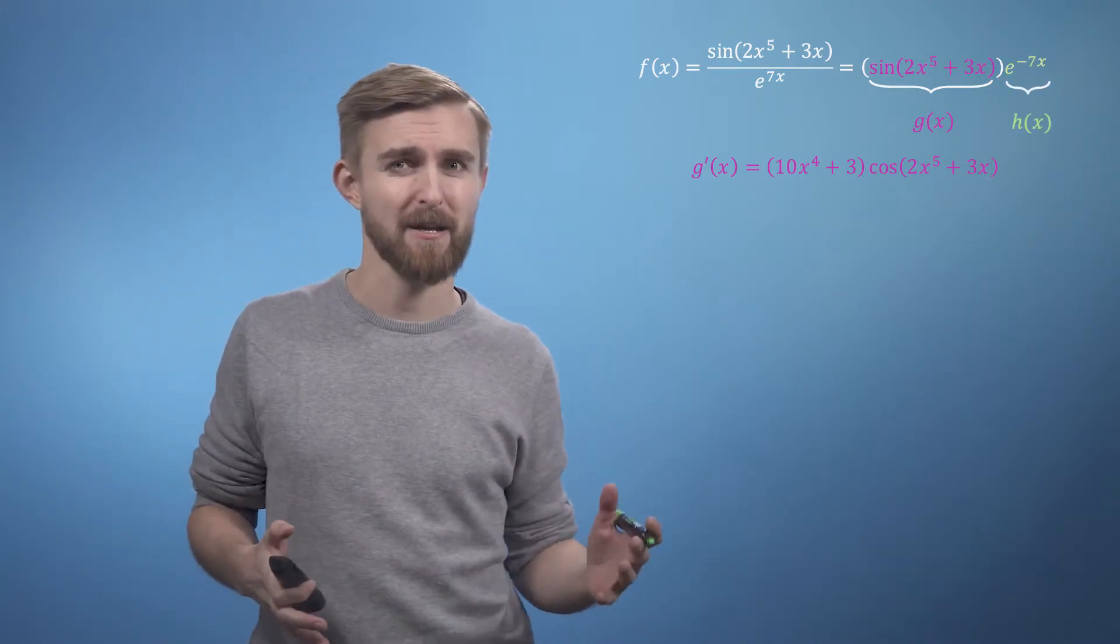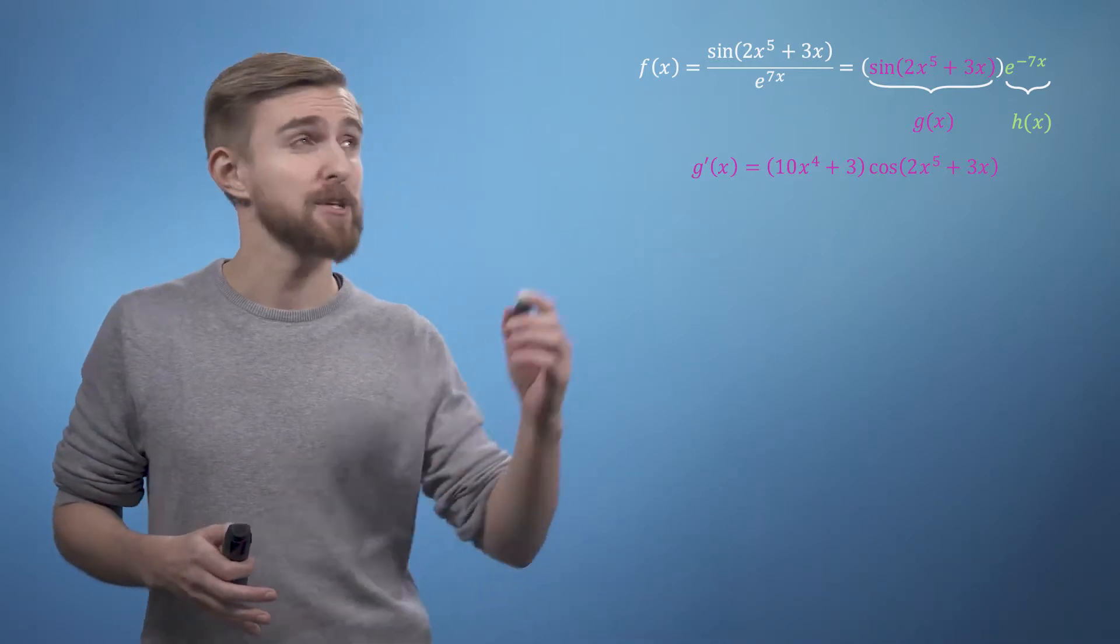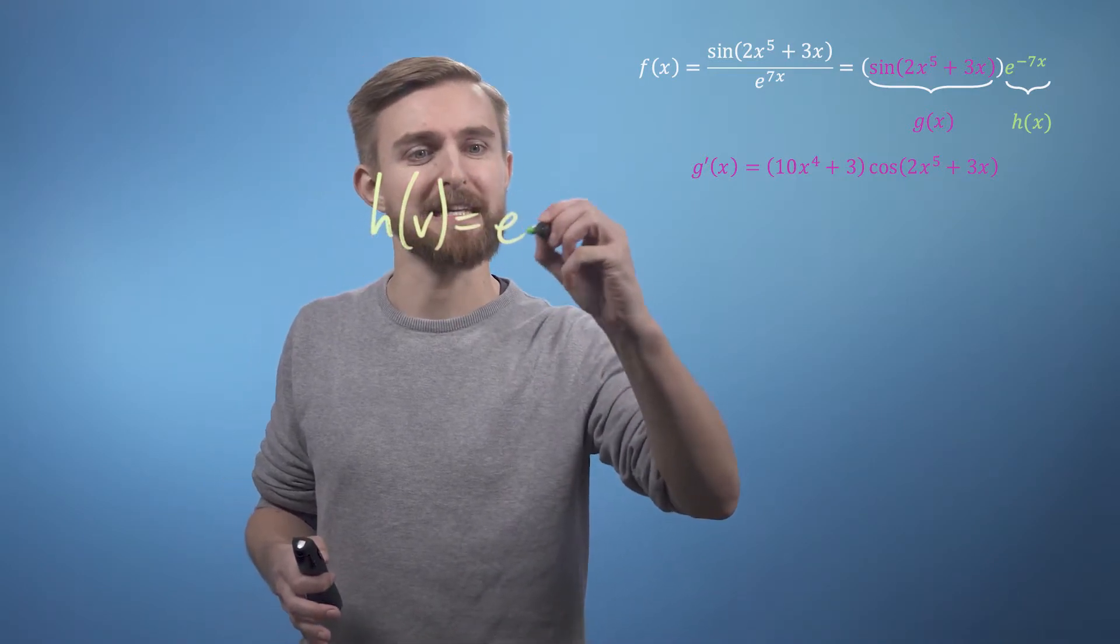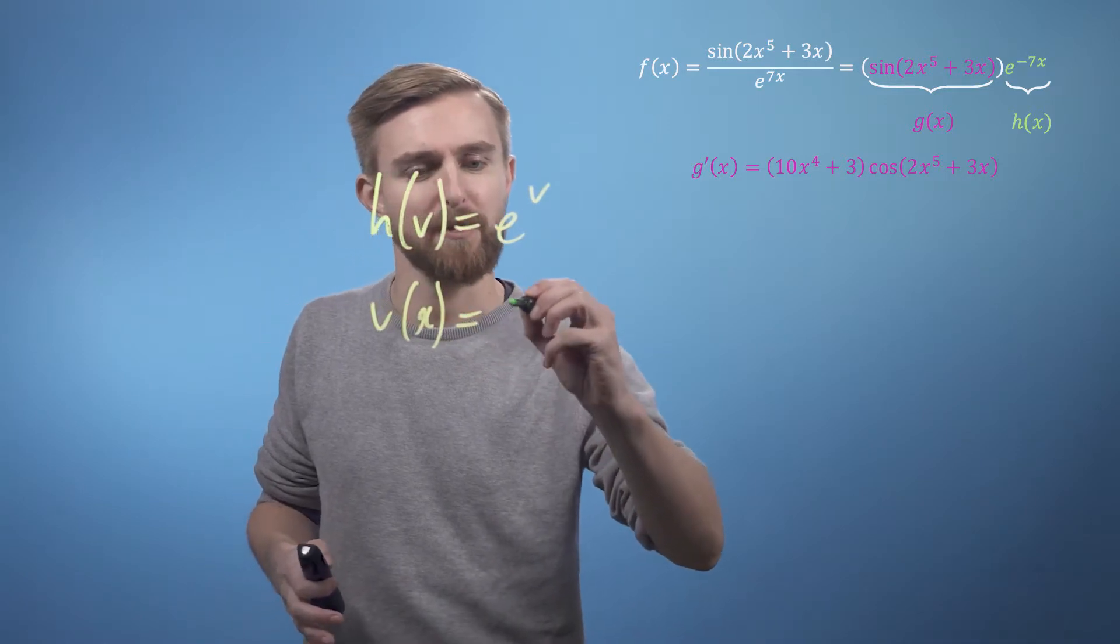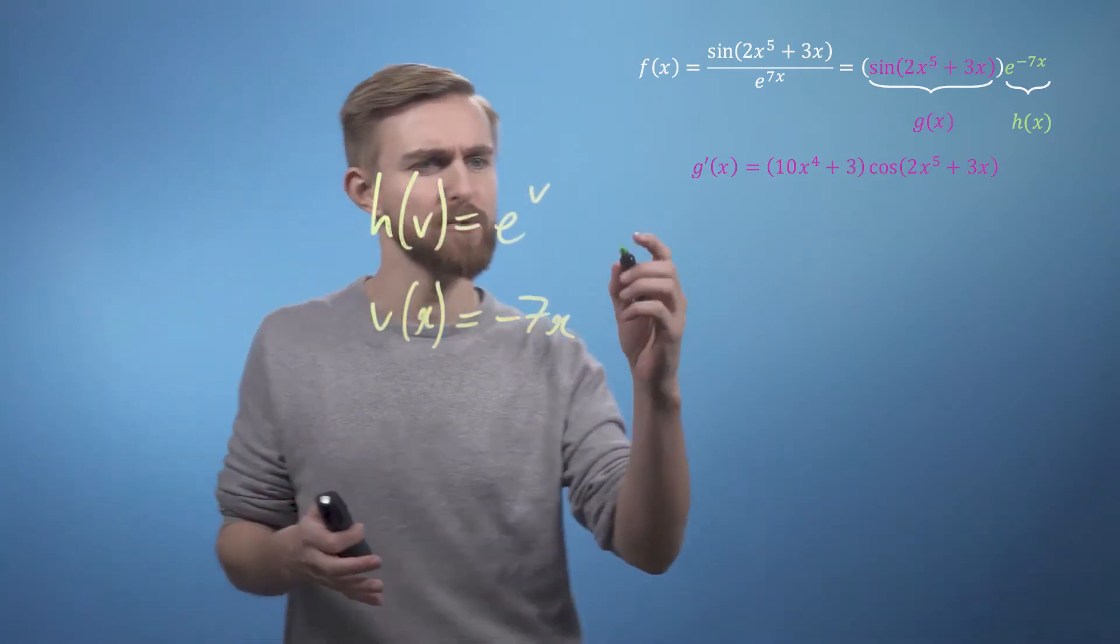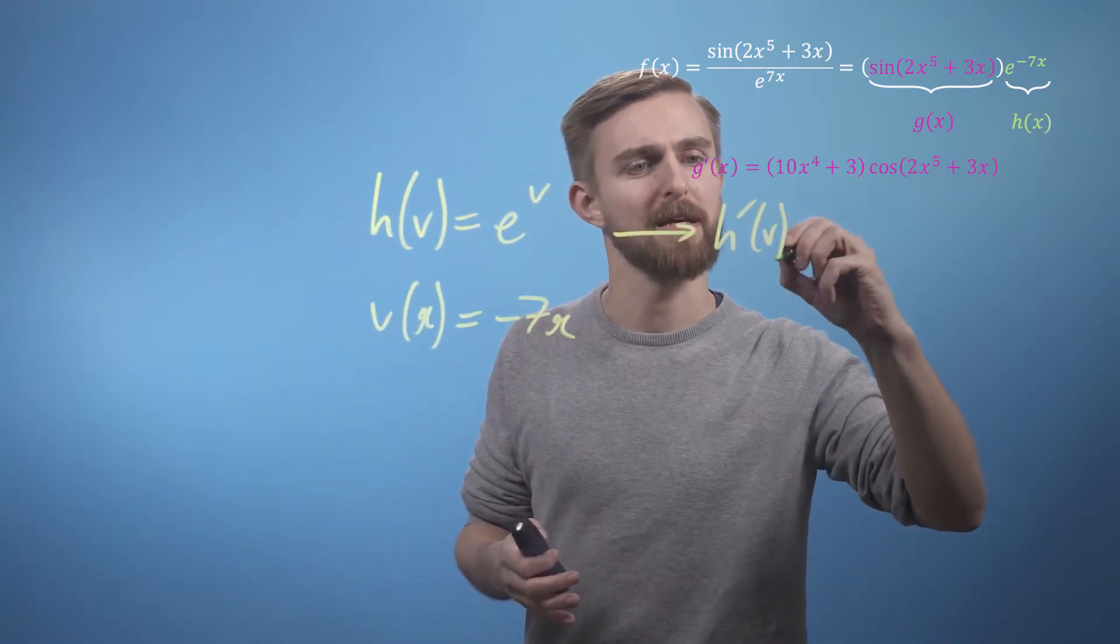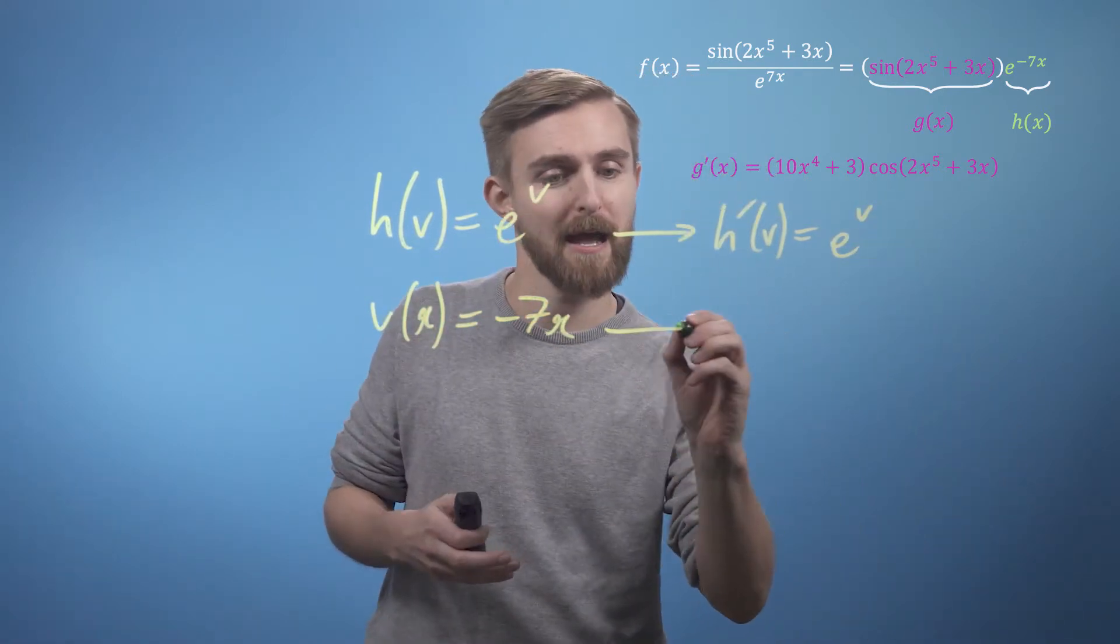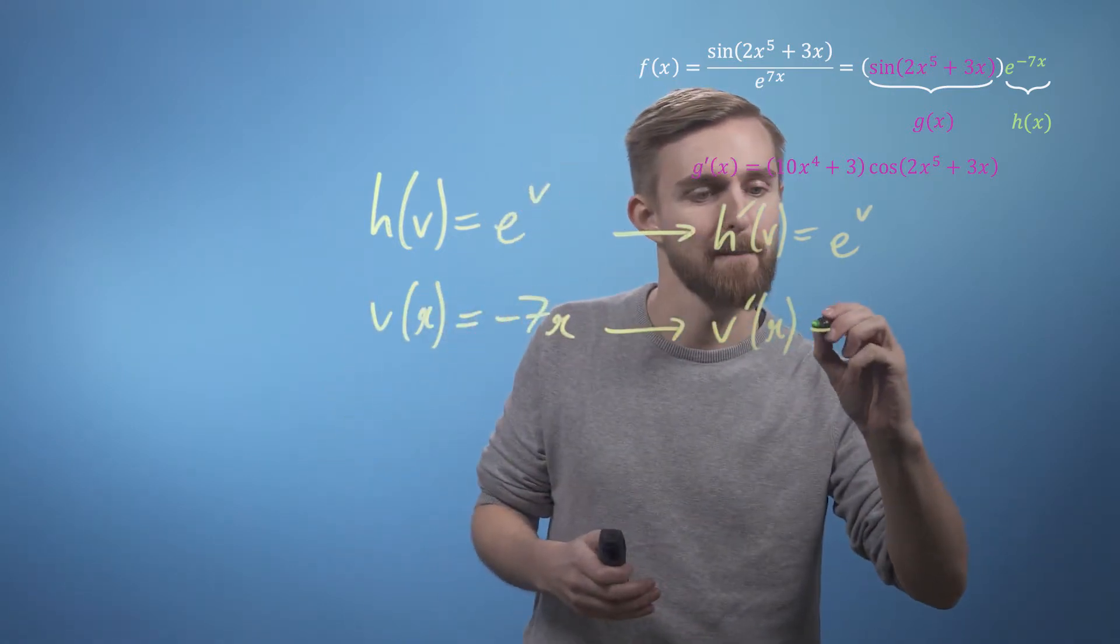Now for the second half of our original expression, which we will call h, once again we can simply apply the chain rule after splitting our function up. So we can say that h equals e to the v, and v equals minus 7x. Now once again we've got our two functions, we just want to find the derivatives. So h prime of v is just going to equal, well we've seen this one before, e to the v again. And v prime of x is going to just be minus 7.